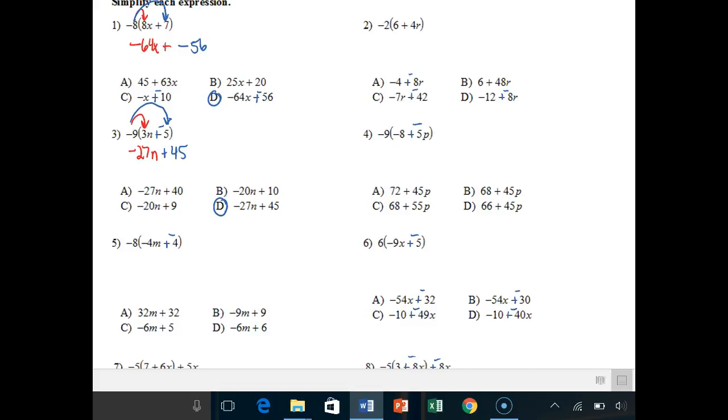You can't just multiply and be like, okay I got it. You've got to ask yourself every single time, should that be positive, should that be negative? Number 5, negative 8 times negative 4, that's a positive 32m. And then negative 8 times negative 4 again, that's a positive 32, it's A.